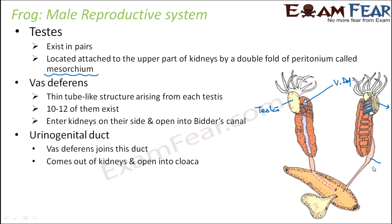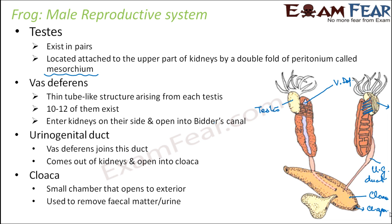Next is the urinogenital duct. The vas deferens joins this urinogenital duct, which comes out of the kidneys and opens into the cloaca. The cloaca is the small chamber that opens to the exterior and is used to remove fecal matter or urine. The sperms are produced in the testes, carried by the vas deferens, then join the urinogenital duct, and finally reach the cloaca. The structure visible here is the urinary bladder, which is used to store urine.